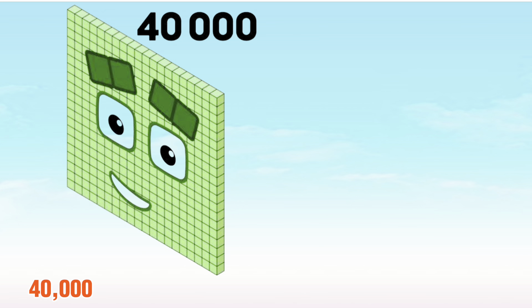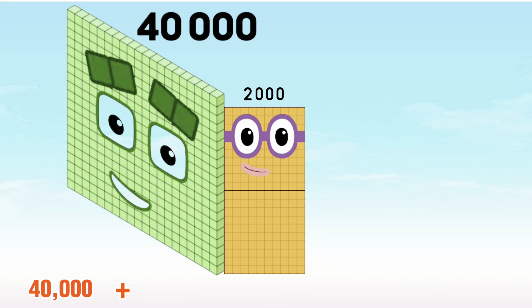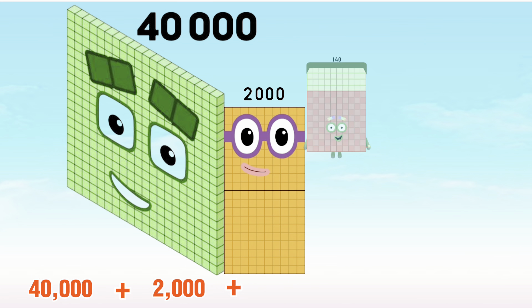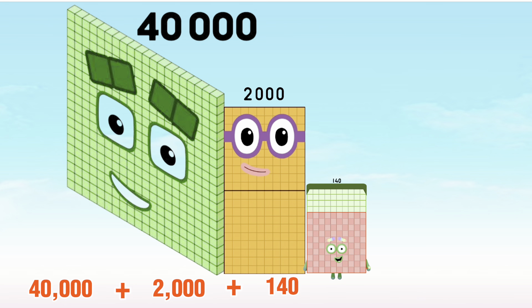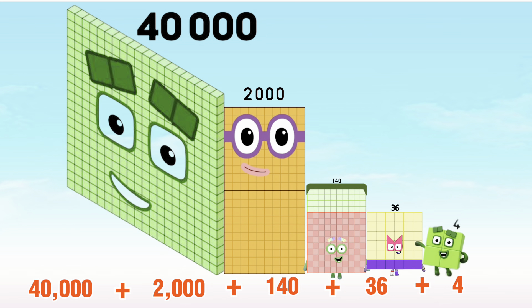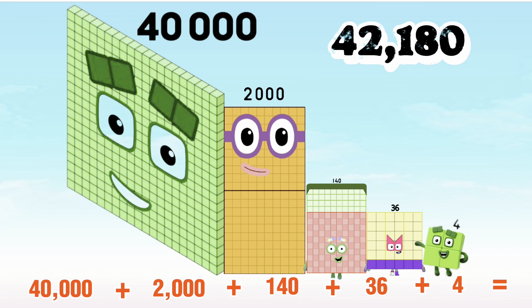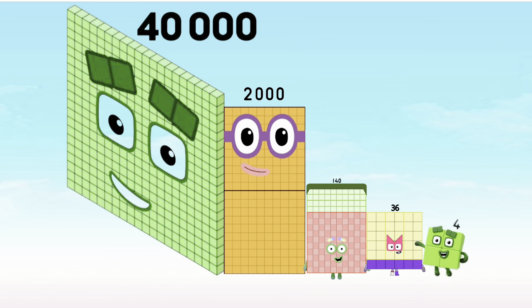40,000 plus 2,000 plus 140 plus 36 plus 4 is equal to 42,180.